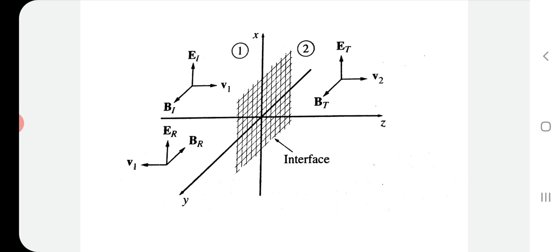To summarize: EI and BI are the electric and magnetic fields of the electromagnetic wave incident at the interface, traveling in the z direction. ER and BR are the electric and magnetic fields corresponding to the reflected wave. ET and BT are the electromagnetic fields corresponding to the wave transmitted into medium 2. The electromagnetic wave is incident normal to the interface.